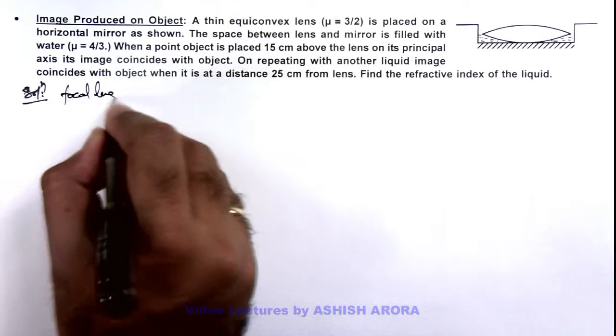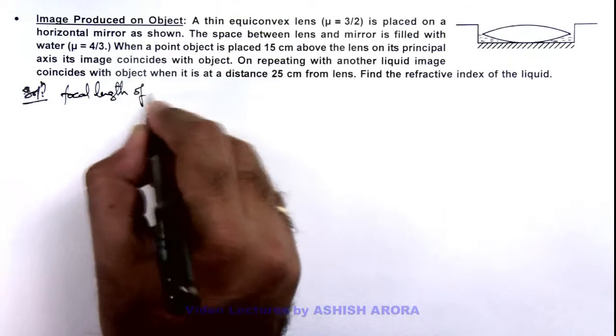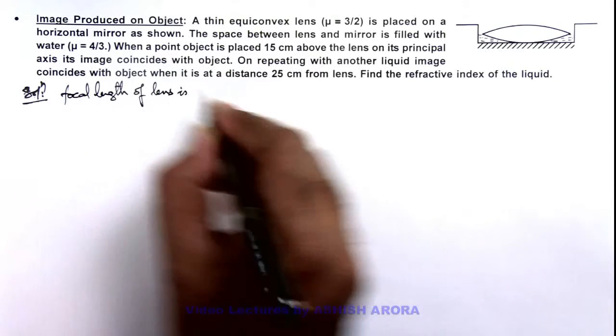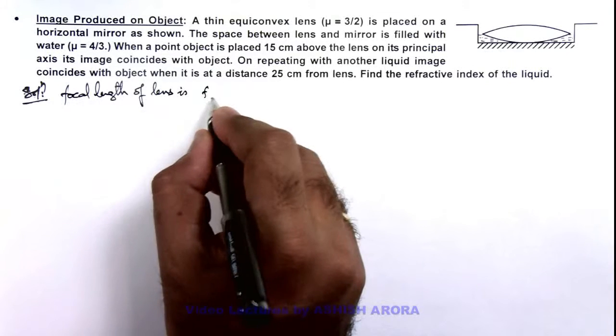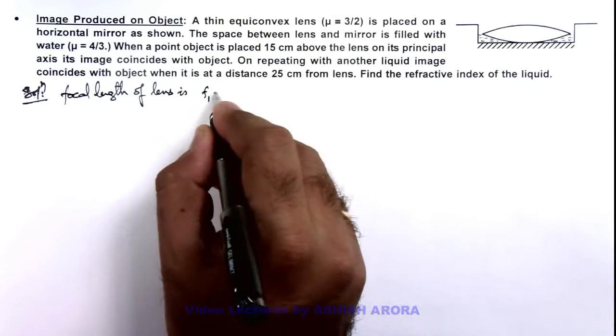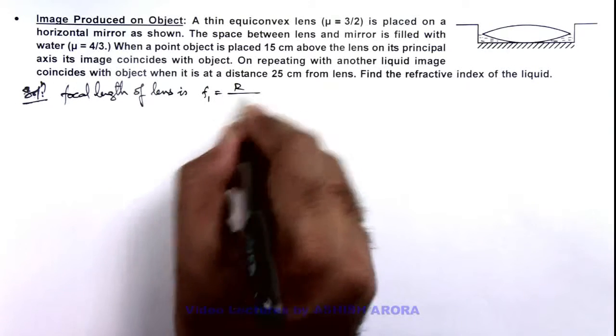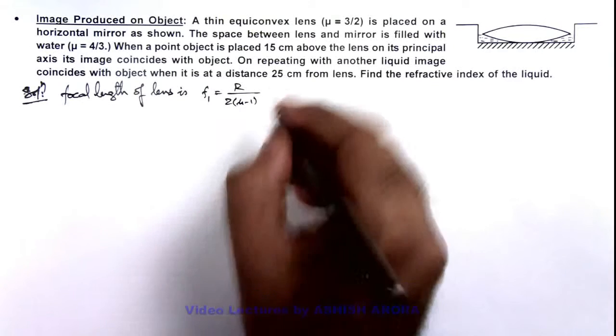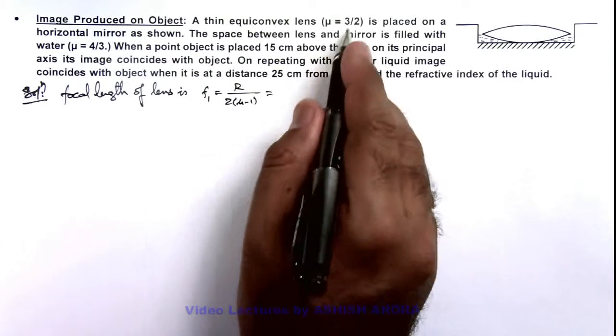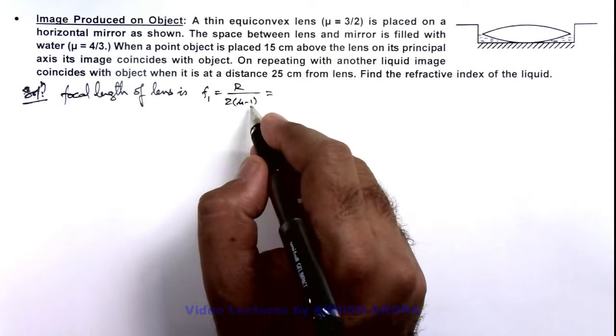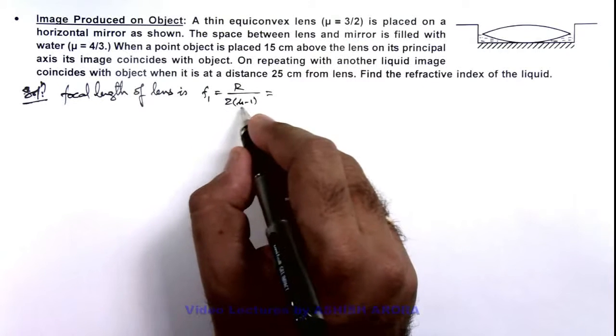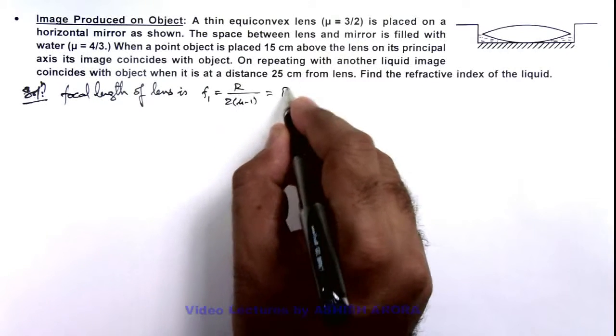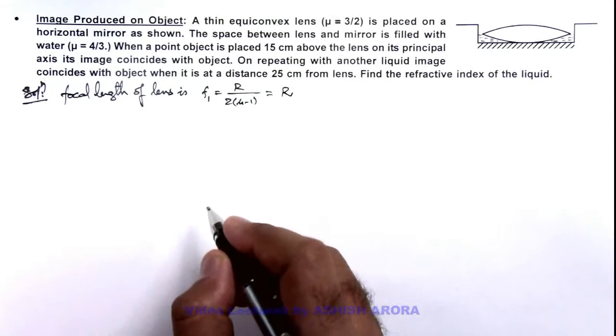The focal length of lens, this focal length can be written as f1, and this we can write as r by twice of μ minus 1 because this is an equiconvex lens. Here if we substitute the value of μ as 3/2, this will be r upon twice of 3/2 minus 1, so the value of focal length is equal to radius of curvature.